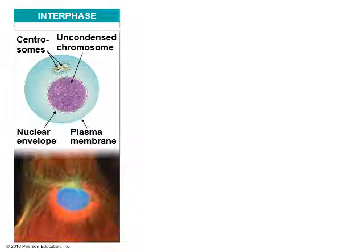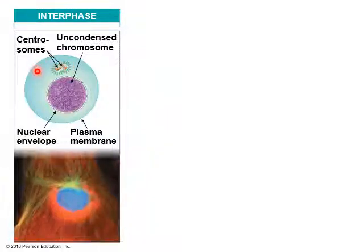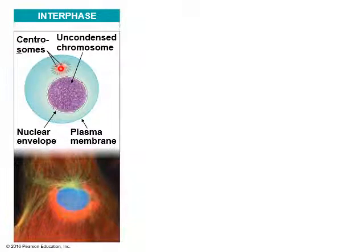Let's talk about what happens during mitosis. First we'll start with interphase, which is the lead-up to mitosis. During interphase the DNA is uncondensed, it's inside a nucleus, and something forming are centrosomes. Remember: centromere — with the letter M — holds two sister chromatids together in the middle. Centrosome — with the letter S — means these things go to the side of the cell during mitosis and are used for moving the DNA around.